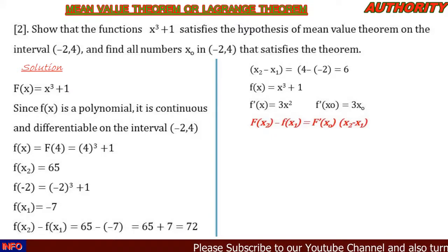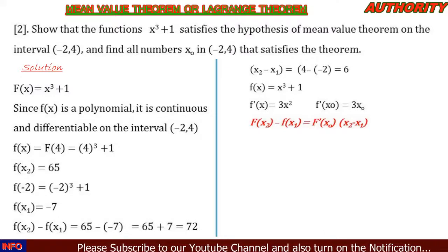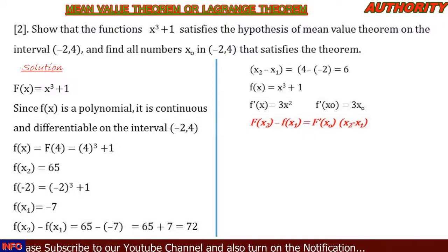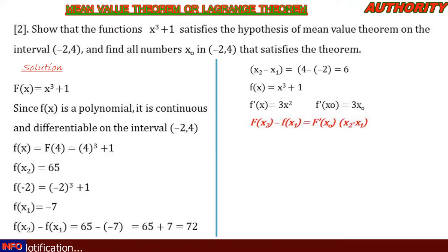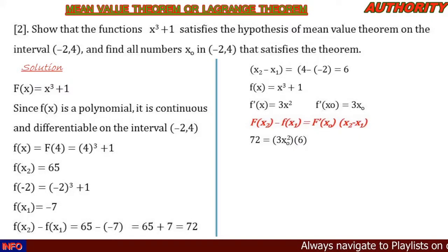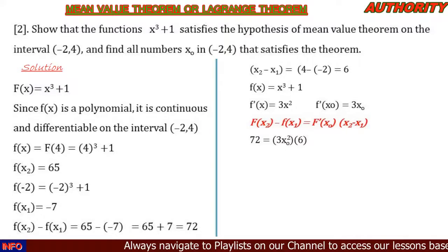By the Mean Value Theorem, if the function is differentiable and continuous on the interval, there must exist a number x₀ such that f(x₂) - f(x₁) = f'(x₀) · (x₂ - x₁). We have f(x₂) - f(x₁) = 72, f'(x₀) = 3x₀², and x₂ - x₁ = 6.